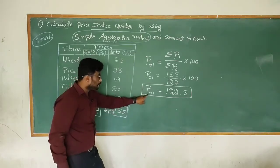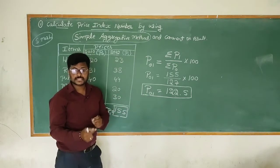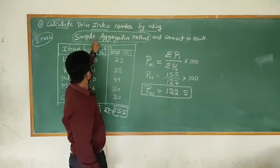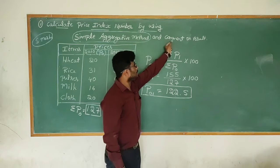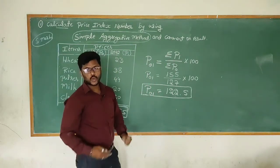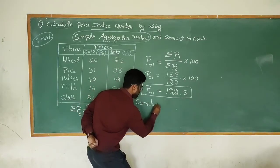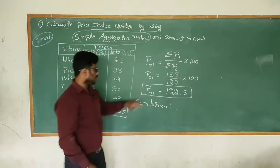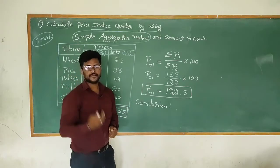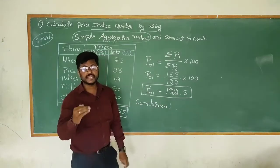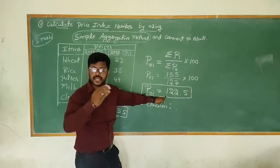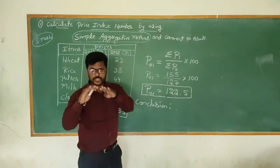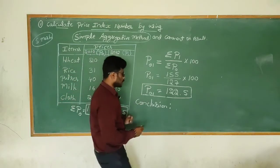P₀₁ = 122.5 means the base year prices are being compared to the current year prices. Now we need to comment on the result. The standard reference price is 100. If the result is more than 100, we conclude that the current year price is increasing. If it is less than 100, we conclude that the current year price is decreasing. Since we got 122.5, which is more than 100, the current year price has increased.